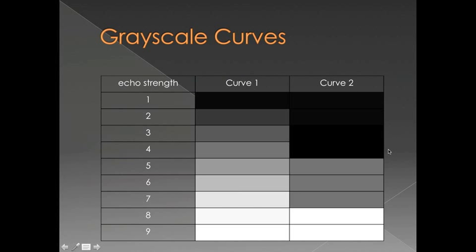So I just gave an example here. This is very similar to the compression diagram, but in this example I'm showing you the echo strength over here again, one through nine. The first grayscale curve is very linear so that you can see that we have a nice smooth transition from black to white.